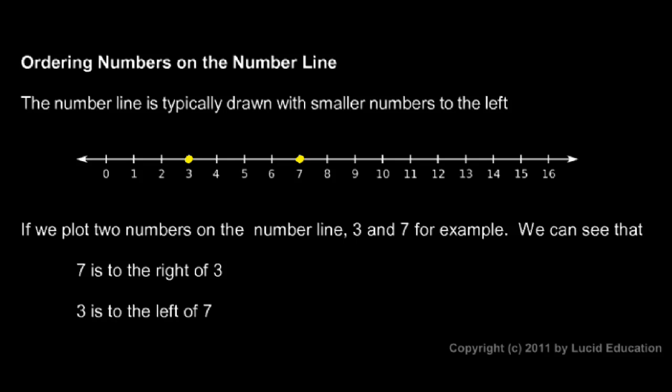You can see that 7 is to the right of 3. What that means is 7 is greater than 3, it's a bigger number. And 3 is to the left of 7, that means 3 is less than 7, because smaller numbers are to the left.